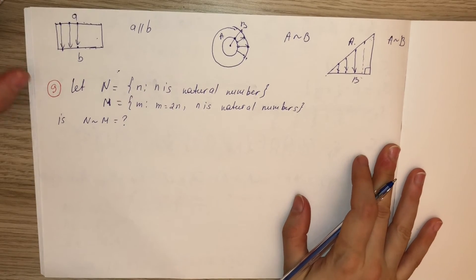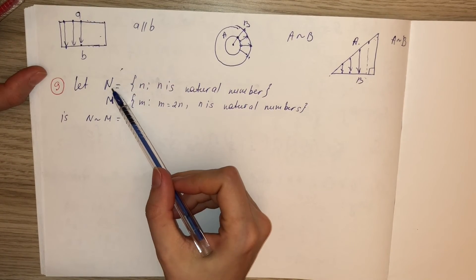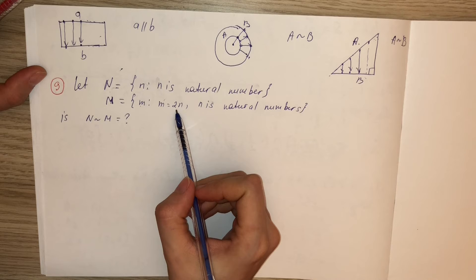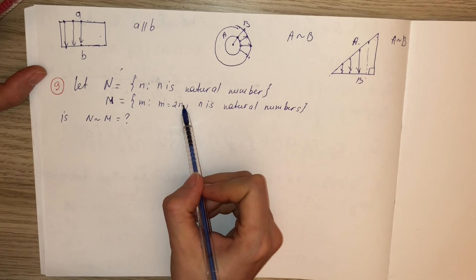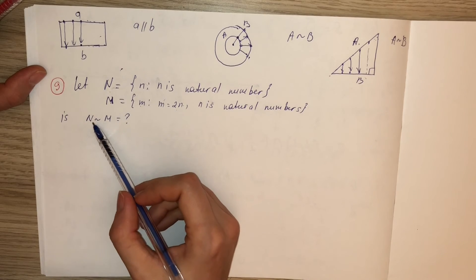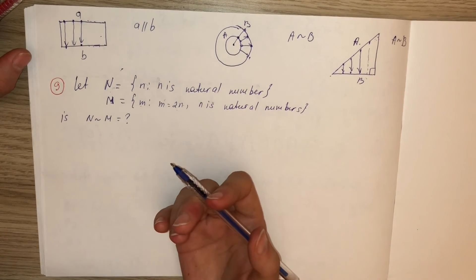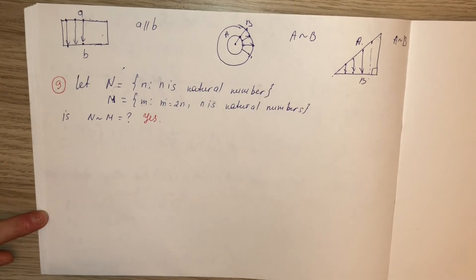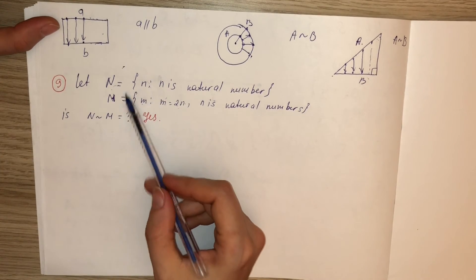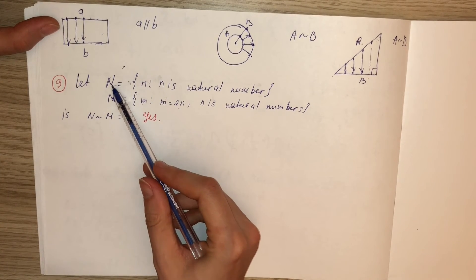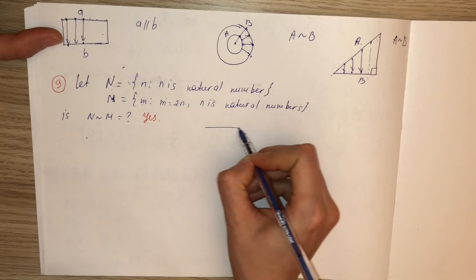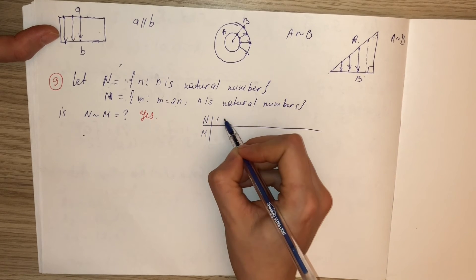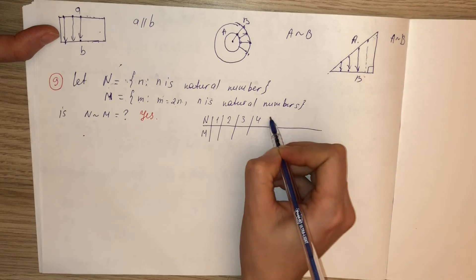Our next exercise: let N be the set of natural numbers and M be the set of even numbers. Is N equivalent to M? Our answer is yes. We can make a one-to-one correspondence between N and M. N: 1, 2, 3, 4, 5, 6, 7, ...